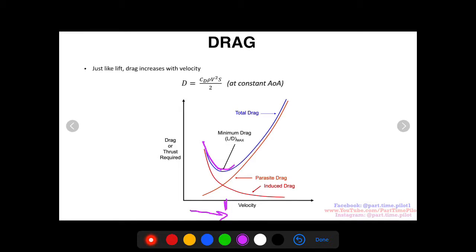And then it turns around when parasite drag takes over and you got induced drag kind of leveling out and parasite drag is exponentially increasing, right? So now it's kind of taking over and now it starts to increase and just keeps on increasing the more, the faster and faster you get.